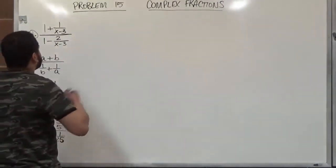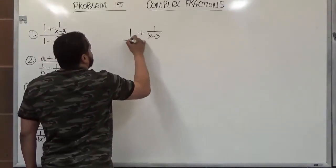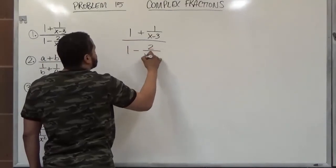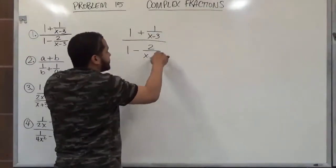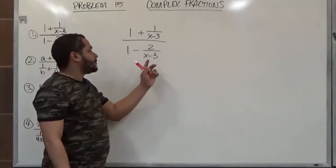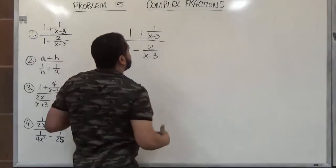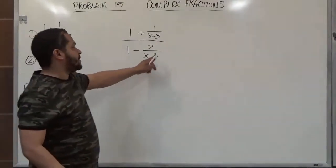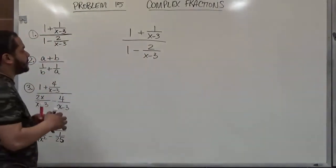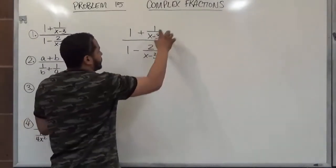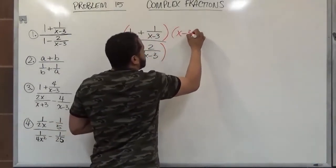Let's take problem number 1 and solve it. We have 1 plus 1 over x minus 3, all over 1 minus 2 over x minus 3. Looking at the numerator and the denominator — the whole top term and the whole bottom term — I see there are fractions in each case. The denominator has x minus 3 as one of the term's denominators, and so does the numerator. Being that they both have the same denominator, we can multiply the numerator and denominator by one common value — the LCD — which is just x minus 3.